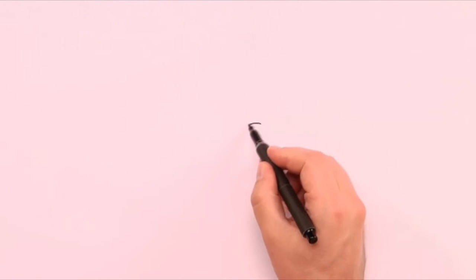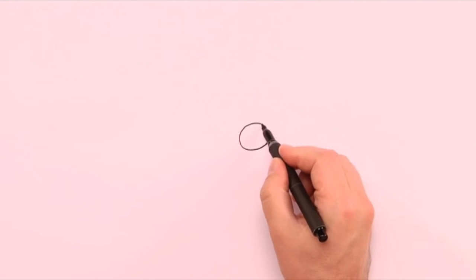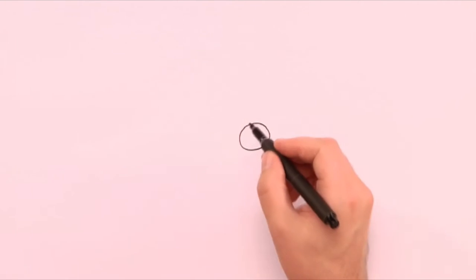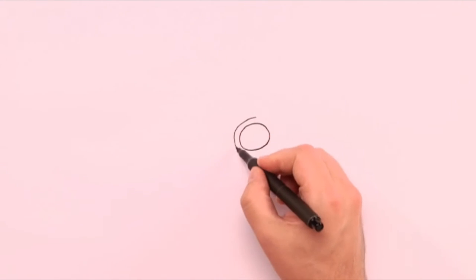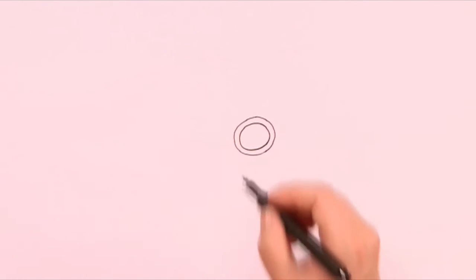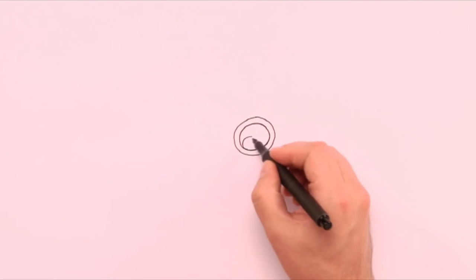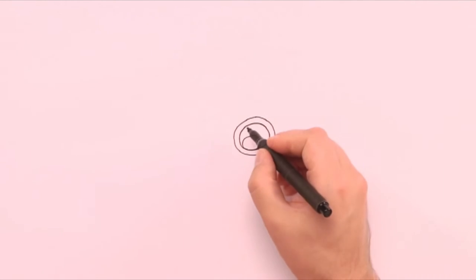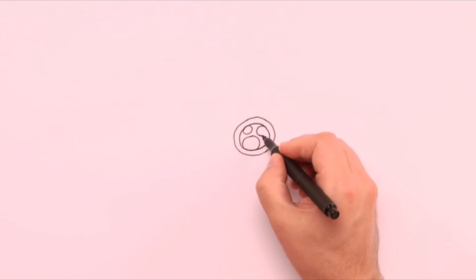I start with drawing a small circle with a black marker. Then we draw another little circle around it. And another little circle inside the first one. And two tiny circles on top. That's the eyes.